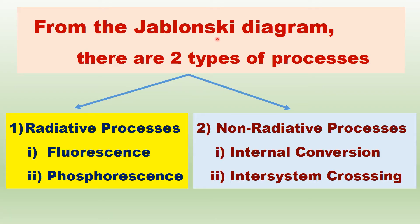From the Jablonski diagram, there are two main types of processes: radiative processes and non-radiative processes. In radiative processes, there are two types: fluorescence and phosphorescence. Under non-radiative processes, there are two types: internal conversion and inter-system crossing, as we have seen in the Jablonski diagram.